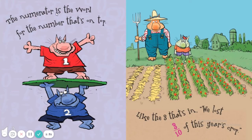The numerator is the word for the number that's on top, like the three that's in 'we lost three tenths of this year's crop.' The numerator is the fraction — the part that we're talking about. Three tenths: the numerator is the three.